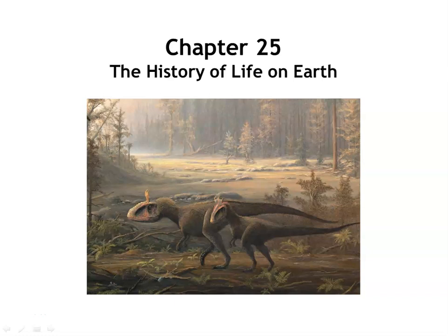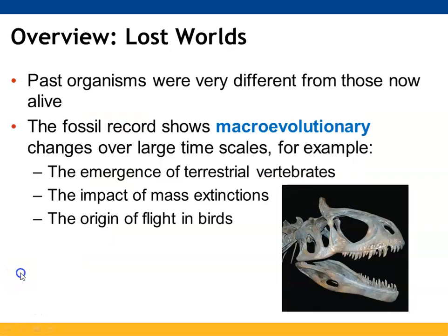Chapter 25 is the history of life on Earth. Past organisms were a lot different than the ones living now. This chapter is going to focus on macroevolution. The fossil record is able to show us these macroevolutionary changes over large periods of time, such as when terrestrial vertebrates first appeared, how mass extinctions have impacted living organisms, and how flight began in birds.